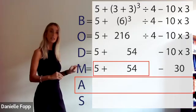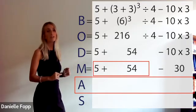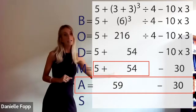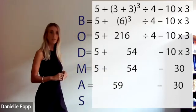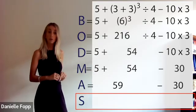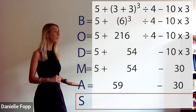Then we move to the addition line. We have 5 plus 54, which equals 59, so we add that in. Now it's getting smaller. Subtraction: 59 minus 30. We know that's 29, so we add that in.